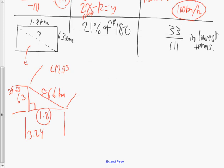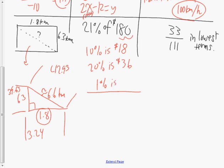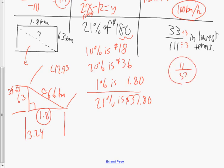Question eight: 21% of 180. You can do this mentally — 10% is $18, 20% is double that which is $36, and 1% is $1.80, so 21% is $37.80. The last question asks for 33 over 111 in lowest terms. Both share 3 as a factor. Dividing both by 3: 33 divided by 3 is 11, and 111 divided by 3 is 37, so the final answer is 11 thirty-sevenths.